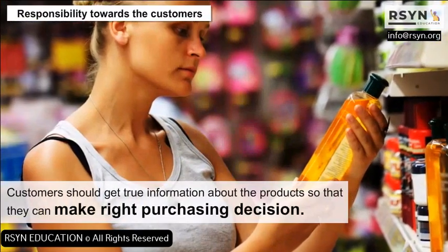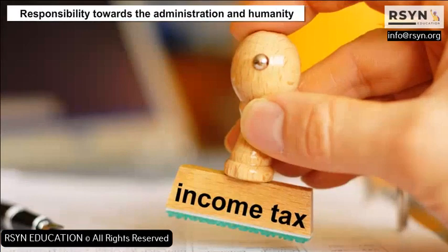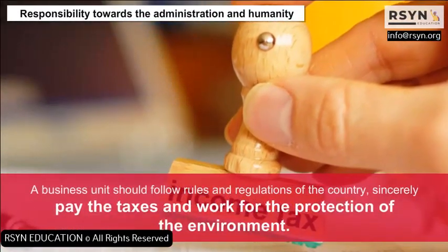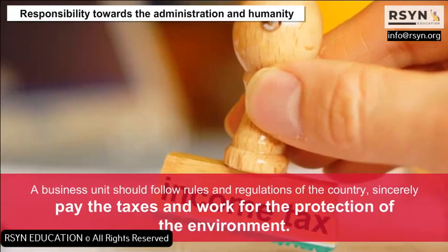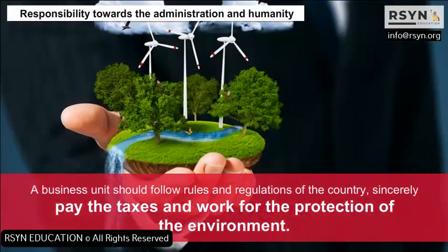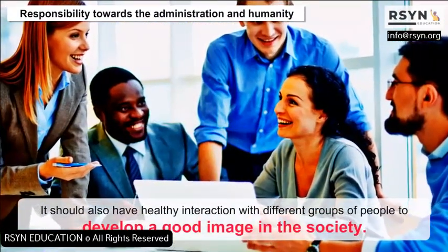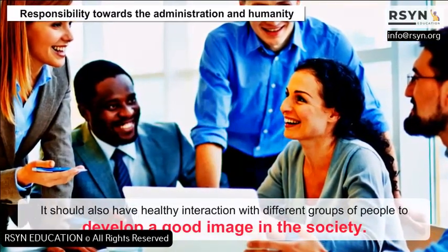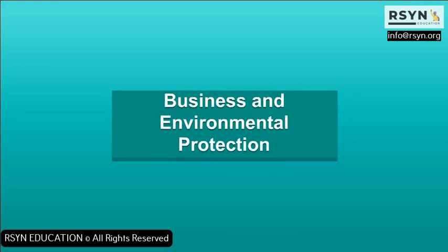Deceptive and false advertisements should be avoided. Customers should get true information about the products so that they can make the right purchasing decision. Responsibility towards the administration and humanity: A business unit should follow rules and regulations of the country, sincerely pay taxes and work for the protection of the environment. It should also have healthy interaction with different groups of people to develop a good image in the society.